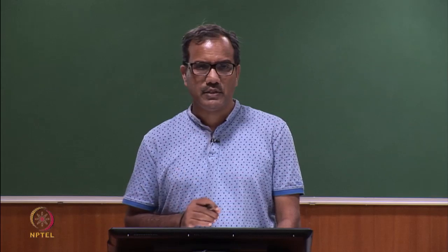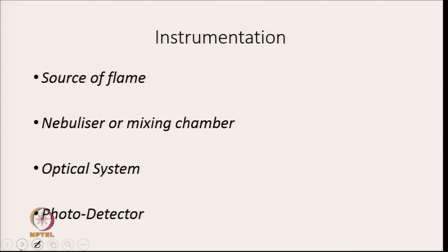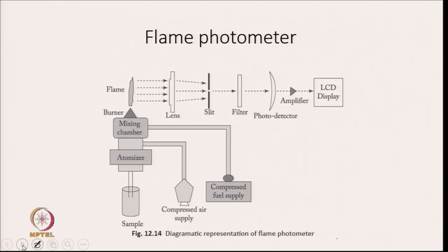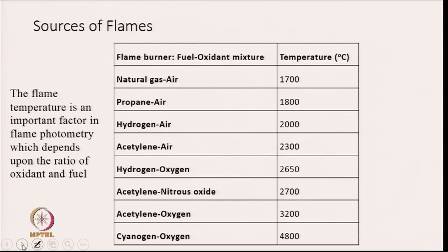The instrumentation of a flame photometer has four important components: a source of flame, a nebulizer or mixing chamber, an optical system, and a photodetector. A typical flame photometer has the sample fed into an atomizer, mixed with fuel in a mixing chamber, burned to produce a flame, then passed through a lens and slit, through a filter, and finally to an amplifier with LCD display.